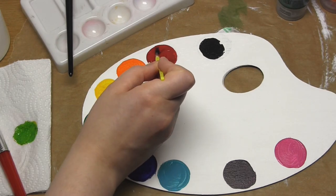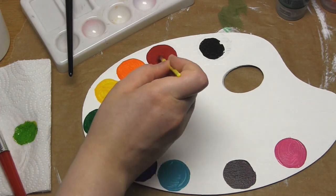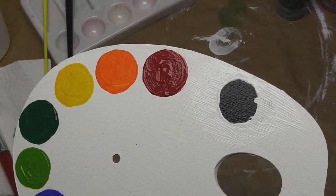After the first layer dried, I could still see the white background through the colors, so I decided to add another coat. I made sure that this second layer of paint was thicker and had more texture. Then I left it to dry.